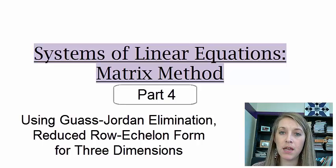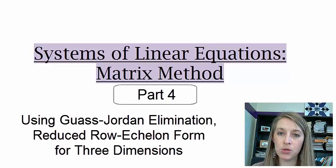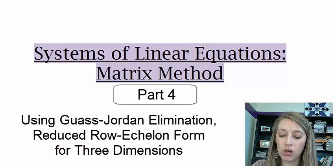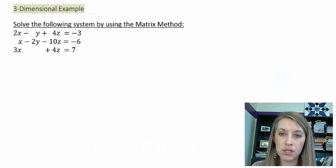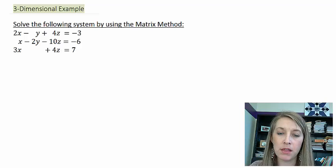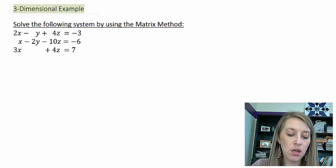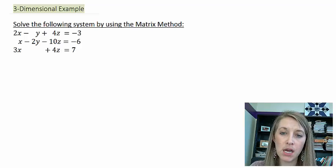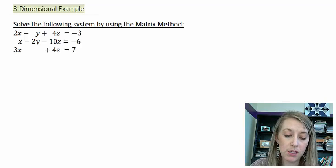Moving on with the matrix method — in the last video I warned you that we're going to be doing it with a three-dimensional example. I showed you what it looks like, so let's go ahead and jump right into it. Now remember there are two ways that we can do the matrix method. We can do the Gaussian elimination, where we have 1s on the main diagonal and 0s below it.